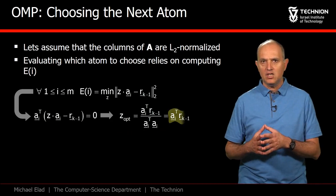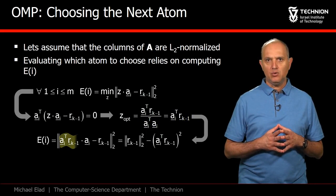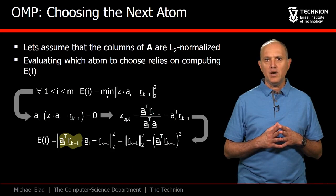zopt equals the inner product between A and the residual Rk minus 1. Notice how the denominator vanished since the atoms are normalized. Plugging the expression of zopt back into the L2 error, and applying a few simplifying algebraic steps,